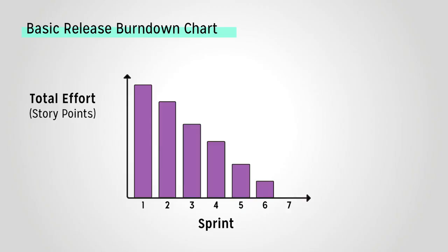Since a release burndown chart can show you all that information, you might be picturing a pretty complicated chart. But that's the beauty of a release burndown — it's a simple concept. Let's take a look at a basic release burndown chart. We have our sprints listed horizontally, and this project has 6 sprints. Vertically, we have the total effort, described with whatever measure your team has chosen — we're going to use story points in our examples.